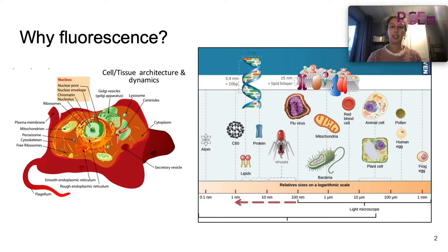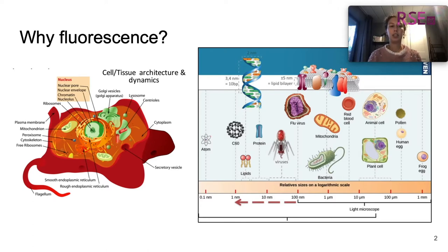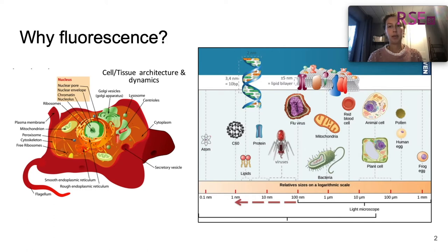It is also very selective, meaning that you can look separately at the nucleus, at the mitochondria, or some other structures by selectively labeling only that structure. Furthermore, sample preparation is very simple and there's a wide range of fluorescent probes available.